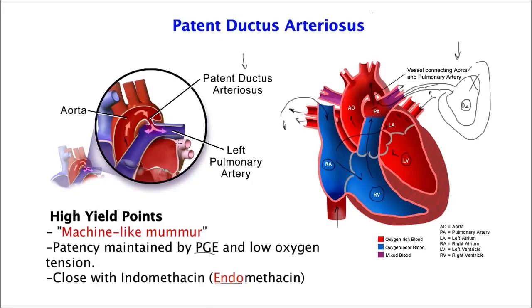Another congenital cardiac association they want you to know about PDA is that it is often associated with patients with congenital rubella. So if they test you on a patient who has rubella and a blueberry muffin rash on their skin and ask you what kind of cardiac defect you're most likely going to see, the answer is PDA — patent ductus arteriosus. That brings us to the end of our lecture on PDA.